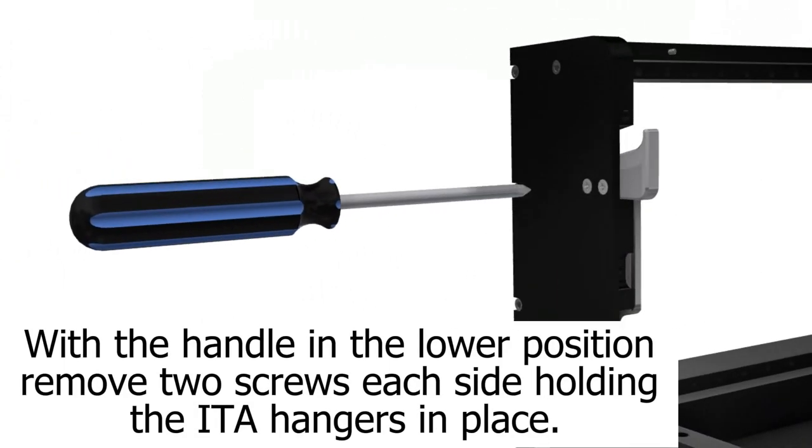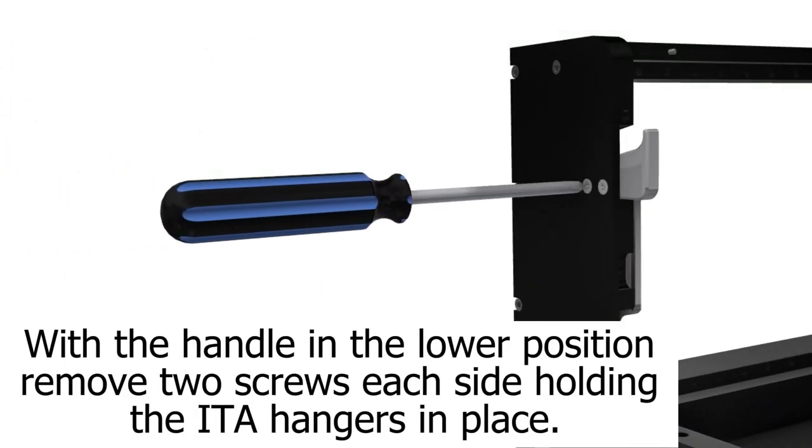With the handle in the lower position, remove two screws each side holding the ITA bush hangers in place.